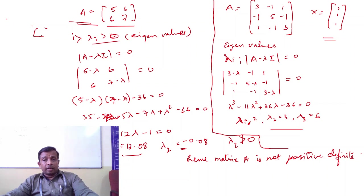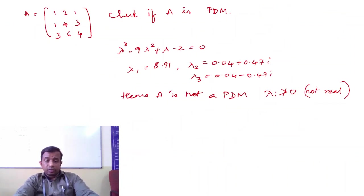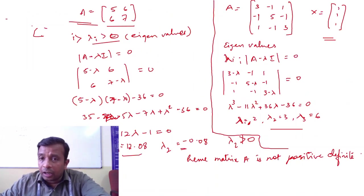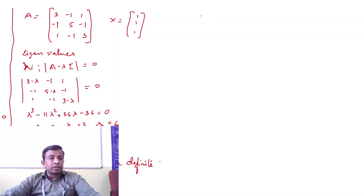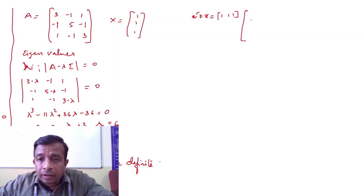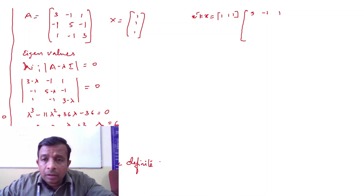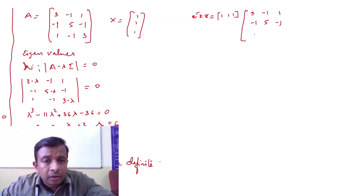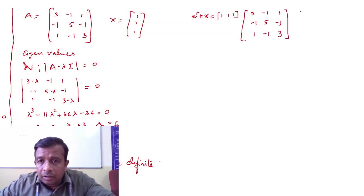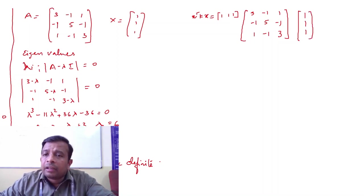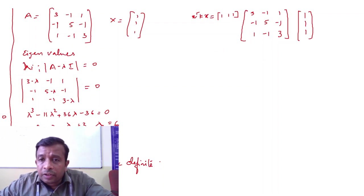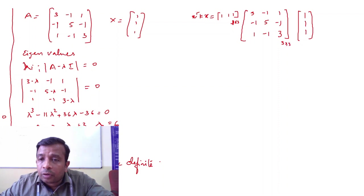Let us also check x transpose K x for matrix A = [3, −1, 1; −1, 5, −1; 1, −1, 3] using real vector x = [1, 1, 1]. x transpose is a 1×3 row vector and A is 3×3, so the product x^T A x will yield a scalar.